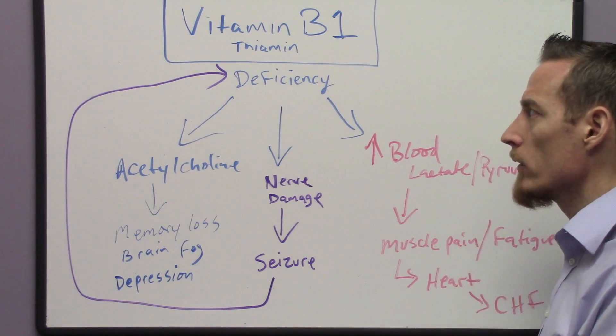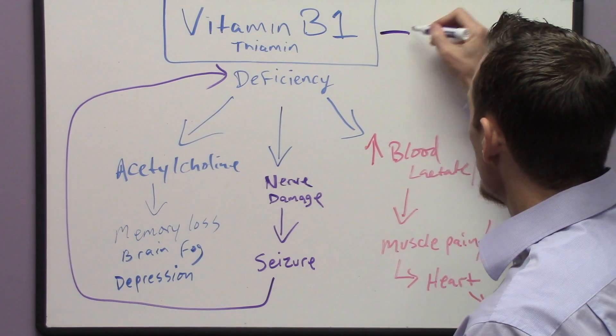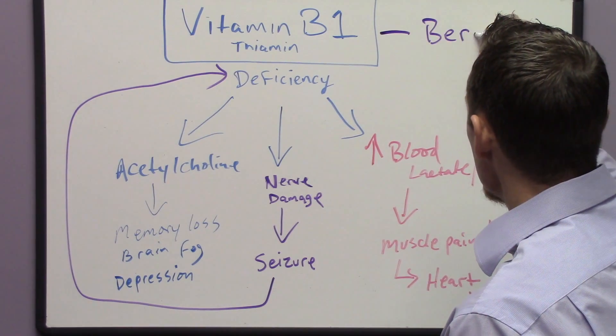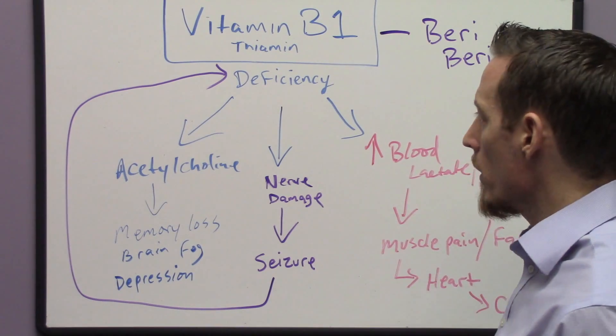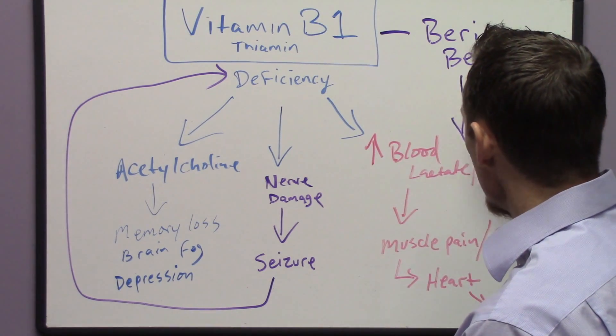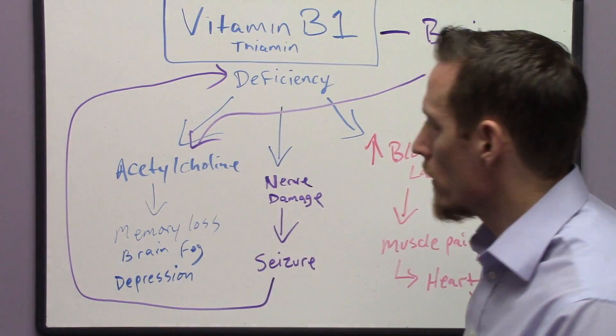Now the name for that, there are a couple different diseases, but the major name for the disease of vitamin B1 deficiency is called beriberi, and beriberi affects your heart and it affects your nervous system.